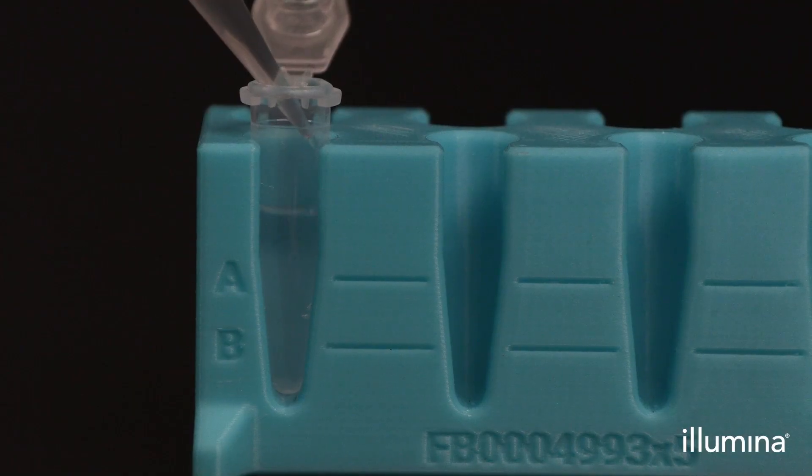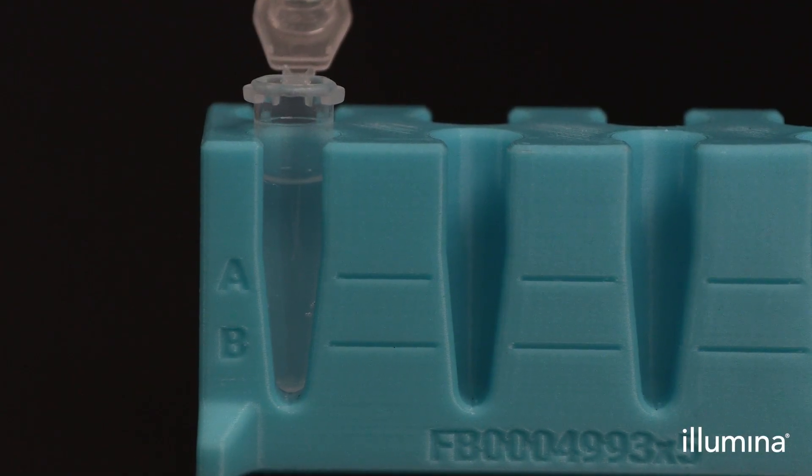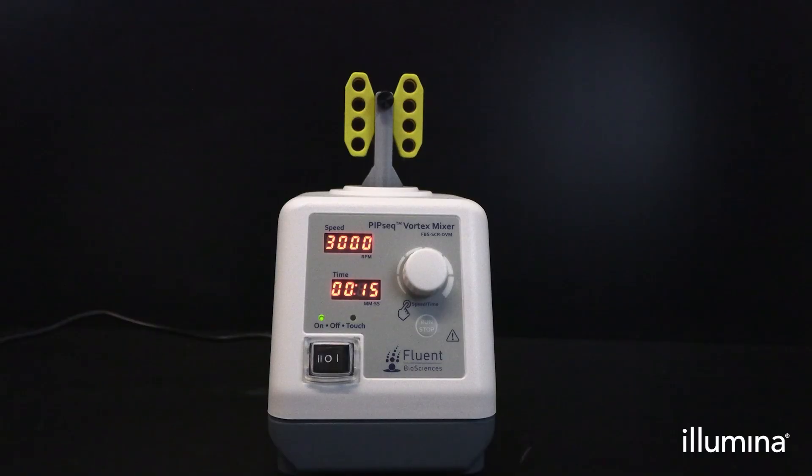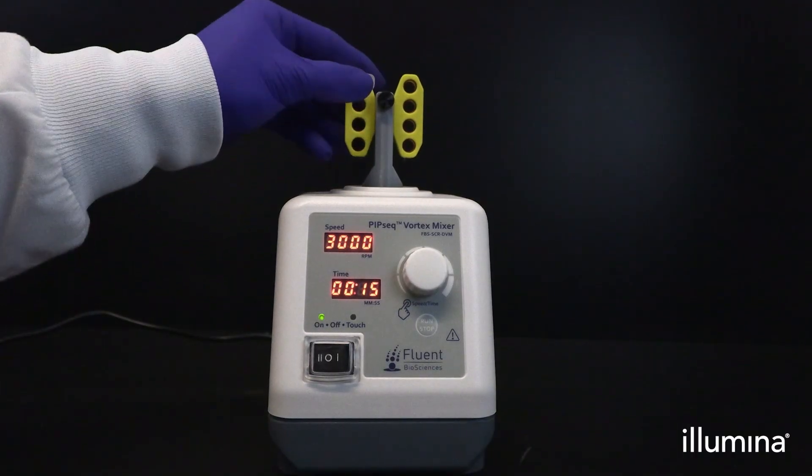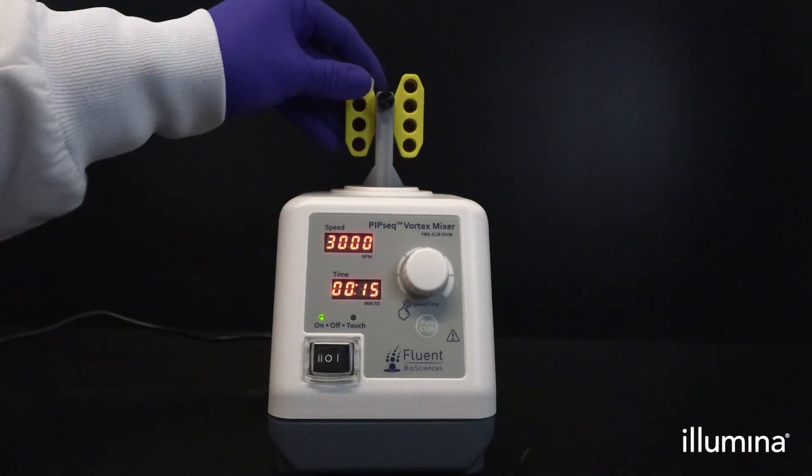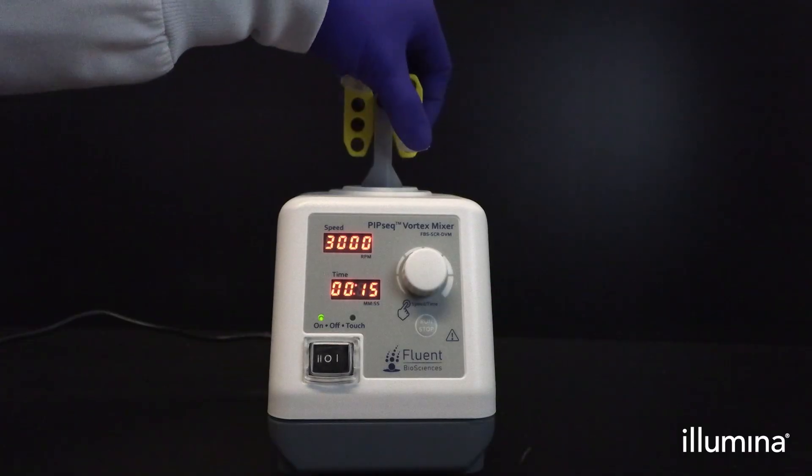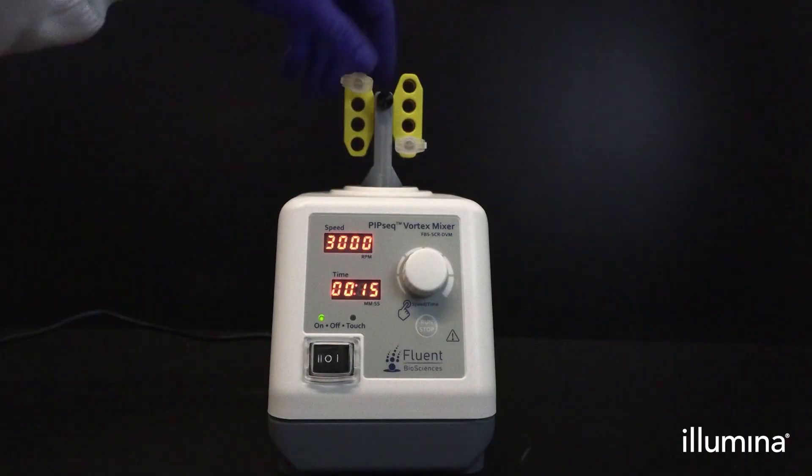Next, add 320 microliters of partitioning reagent down the side wall of the pip tube. Tightly cap tubes and place in the rotating vortex adapter in the horizontal configuration. Ensure the tubes are fully inserted into the adapter.